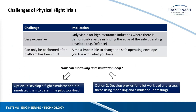However, this approach has a few key challenges. First, it's really expensive - you need helicopters, a ship, pilots, flight crew, fuel and everything else. Because it's so expensive, it's only really viable for high-assurance industries like defence where there is demonstrable value in finding the very edge of the safe operating envelope. An oil and gas operator with a helideck probably doesn't need to find the very edge - they just want to know what's safe. The other key challenge with physical flight trials is that you can only perform them after the platform has been built. Because you can't do it until both ship and helicopter have been built, it's almost impossible to change that safe operating envelope afterwards - you just have to live with what you have.